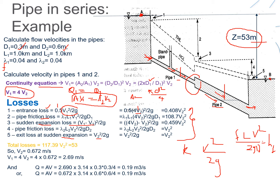The total loss — combining both friction and minor losses — sums to 117.39·V2². That must equal the actual head loss of 53 m, which is the difference in elevation between the two reservoir levels. Here we are applying the energy equation: p1/γ + V1²/2g + z1 minus head loss equals p2/γ + V2²/2g + z2.